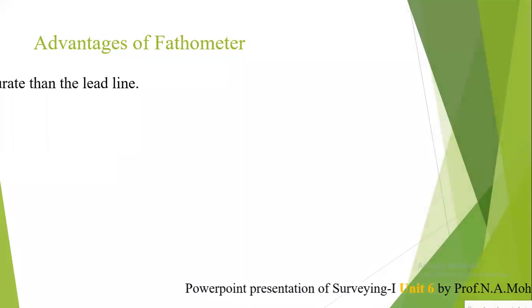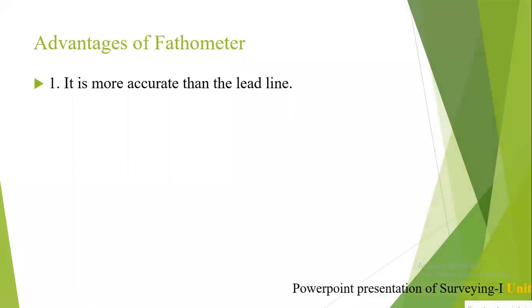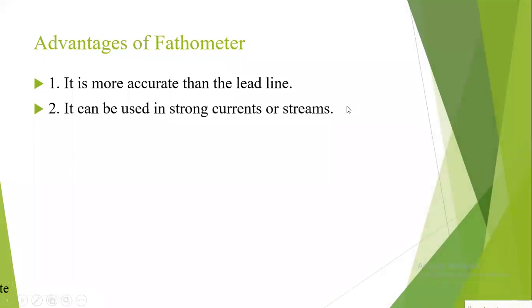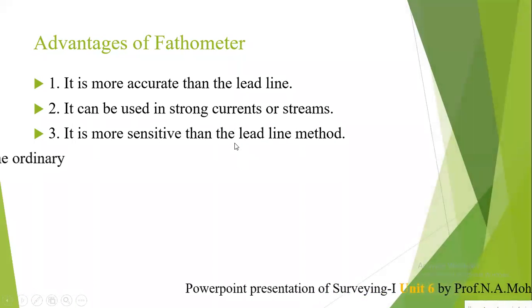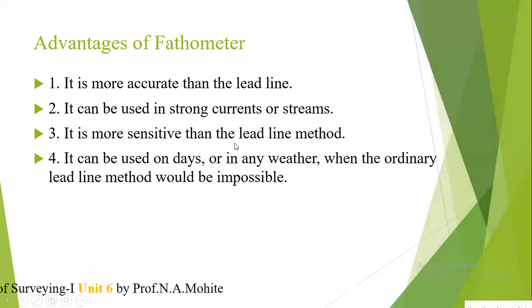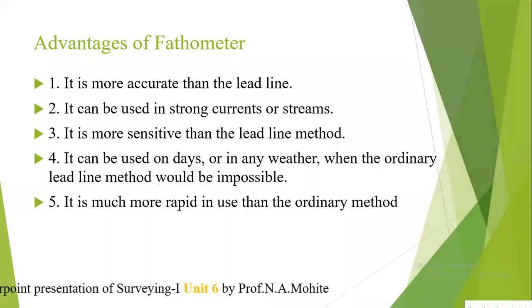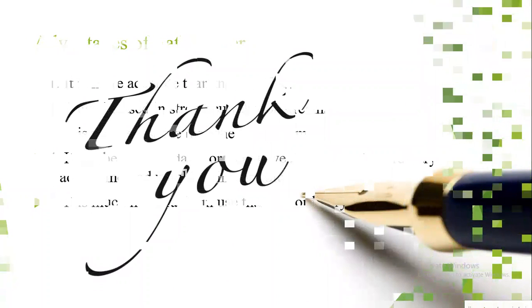The uses of the fathometer or echo sounder are: it gives more accurate results than the lead line; it can be used in strong currents or streams; it is more sensitive than the lead line method; it can be used on days when the ordinary lead line method would be impossible; and it is more rapid in use than ordinary methods.